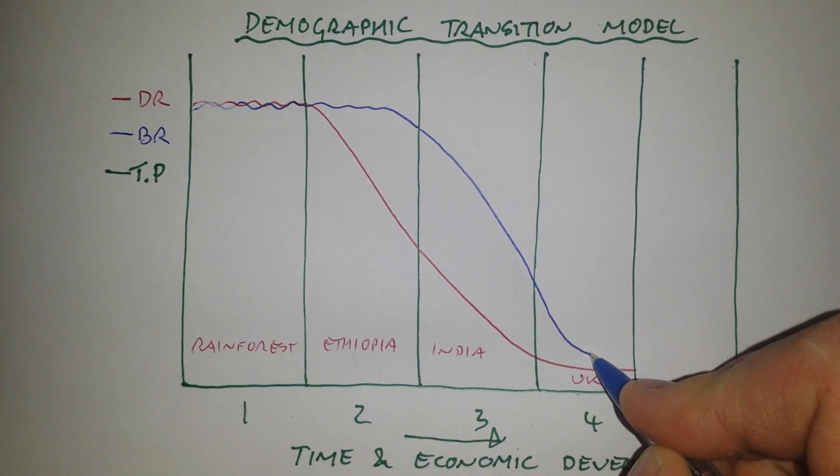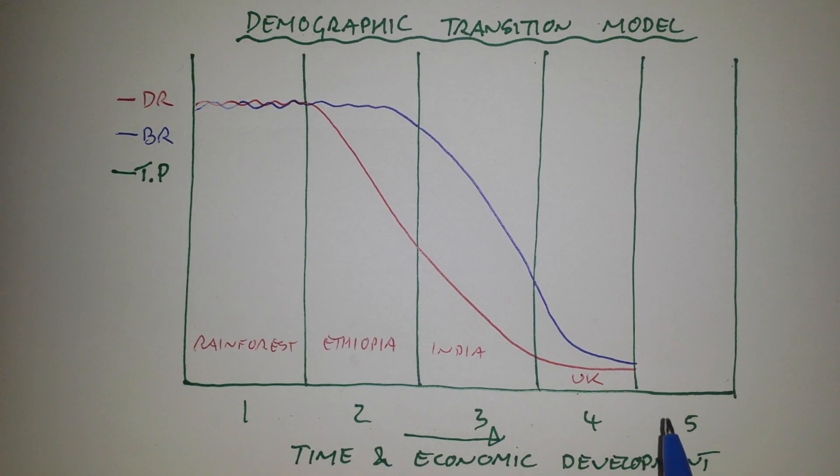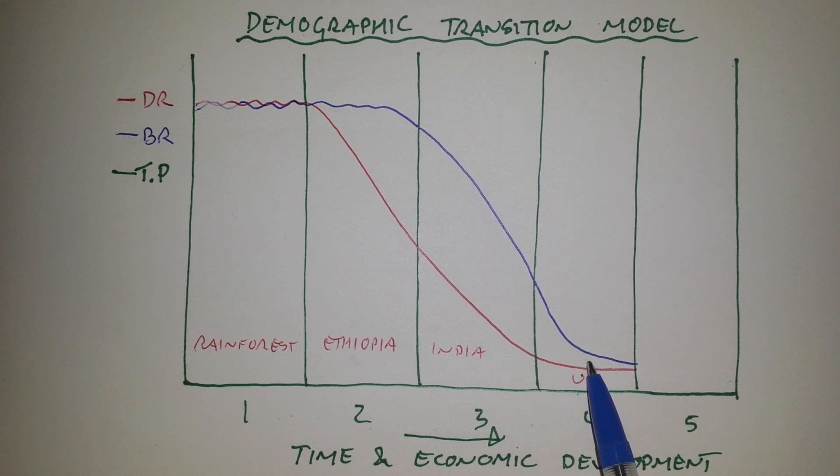And by the time you get into stage four, you've got this nice low birth rate. And this is where the UK is. The birth rate is still slightly above the death rate. So the population will continue to increase, but only very slightly because it's only slightly above. So by stage four, you've got low steady birth rate and also death rate.